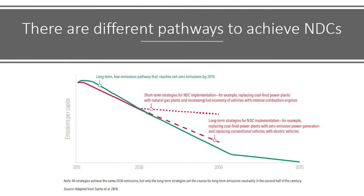There are different pathways in terms of these NDCs. Countries need to scale down on fossil fuels, scale up renewable energies — wind and solar — scale up uptake of electric vehicles, and scale up energy efficiency. There is also a need to build resilience so that infrastructure supporting the net zero transition remains intact.